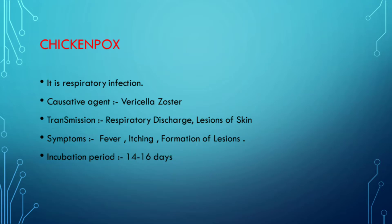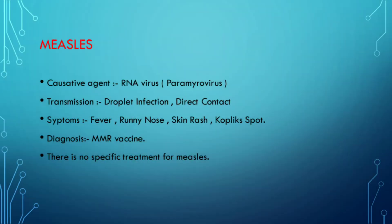itching, and formation of lesions. Second is measles. The causative agent is an RNA virus, that is paramyxovirus. Mode of transmission is droplet infection, direct contact of a person, or a fomite. Symptoms include fever, runny nose, skin rash, and Koplik spots. The MMR vaccine can be used for prevention.